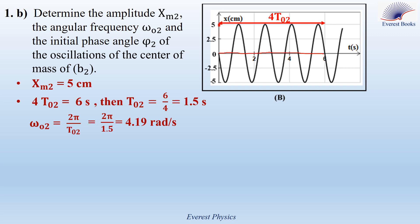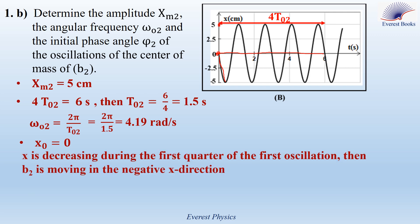Now let's determine the initial phase angle phi. First, we must identify from the curve the initial conditions x0 and v0. x0 is the abscissa at t equals 0, which is 0 on the curve. For v0, we can't determine its magnitude from the graph, but we can specify its direction. During the first quarter of the oscillation, x is decreasing, so the center of mass is moving in the negative x direction and v0 is negative.